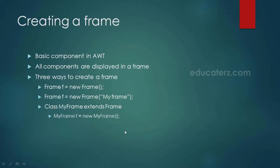There are three ways to create a frame. The first way is to create an object of the Frame class — Frame f = new Frame(). The second way is giving a title for the frame. And the third way is creating a subclass, that is: class MyFrame extends Frame — creating a subclass and creating an object to that class and using it.